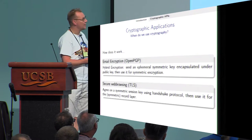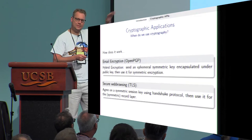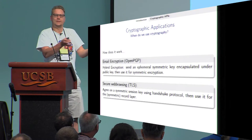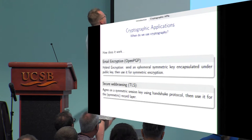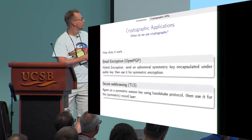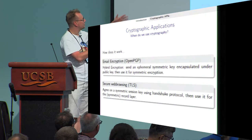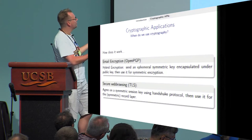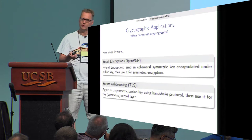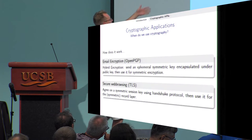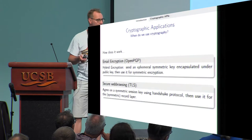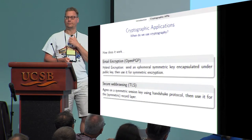So you can ask yourself: how does this work? Assuming you know about these things — email encryption uses hybrid encryption, where you send an ephemeral symmetric key encapsulated under the public key and then use that ephemeral key for symmetric encryption. For secure web browsing, you agree on a symmetric session key using the handshake protocol and then use it for a symmetric record layer.